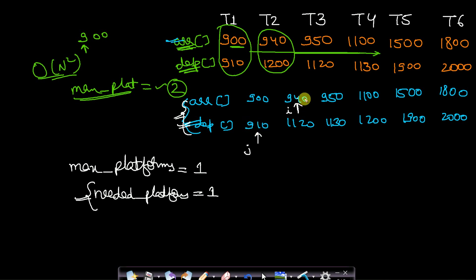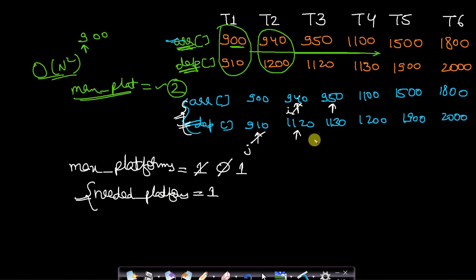We start iterating and check which time is lower. 9:10 is lower than 9:40, so we increment the departure pointer j and decrement max_platforms to 0 — meaning no train is at the station after 9:10. Next, 9:40 is lower than 11:20, so we increment pointer i and increment max_platforms to 1. Then 9:50 is still lower than 11:20, so another train has arrived — we increment i and max_platforms becomes 2.